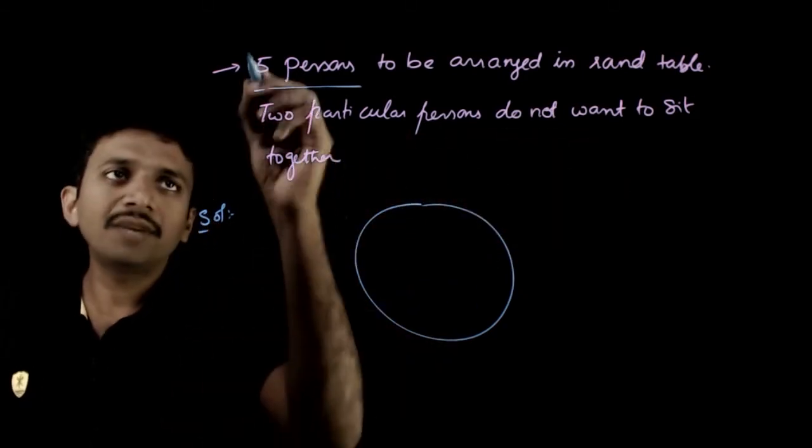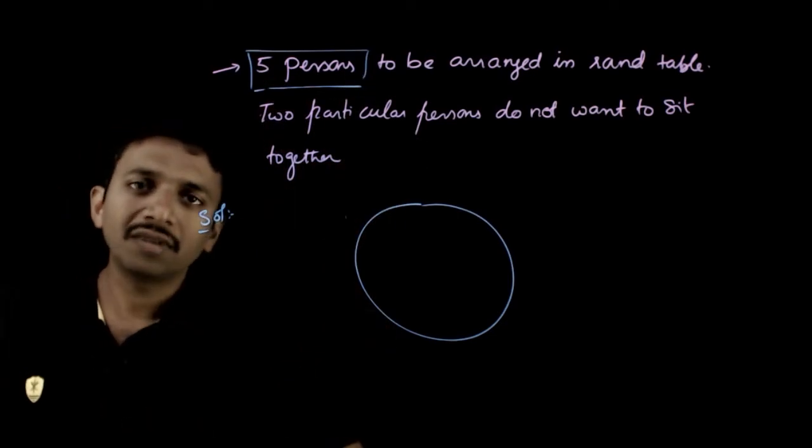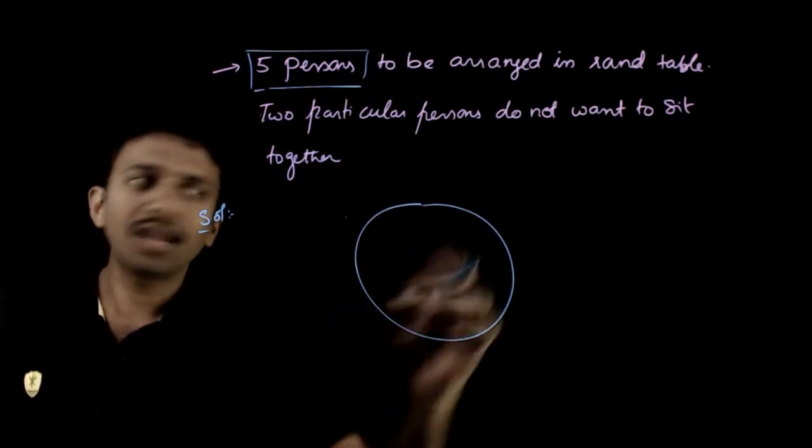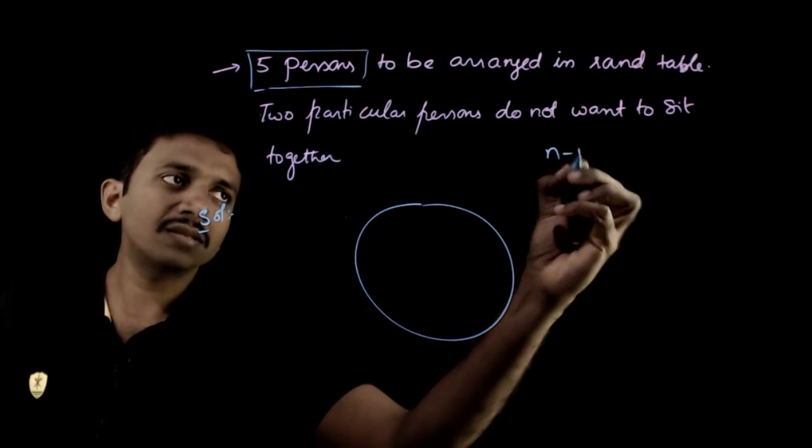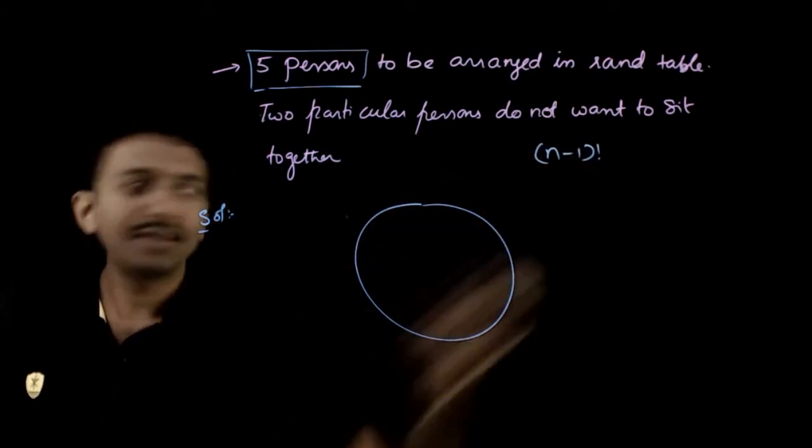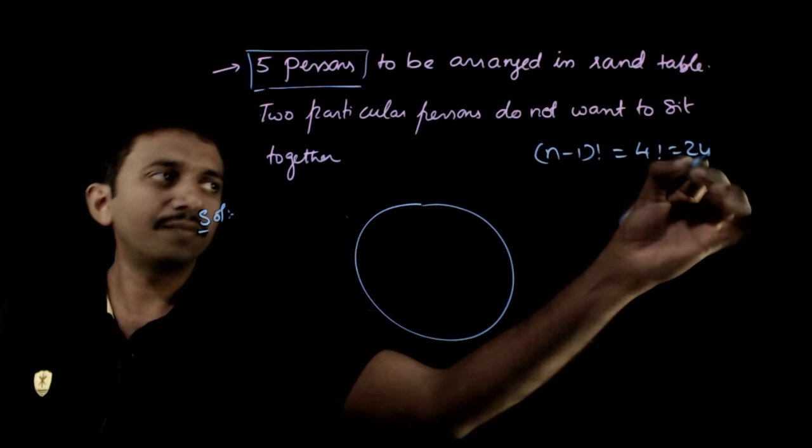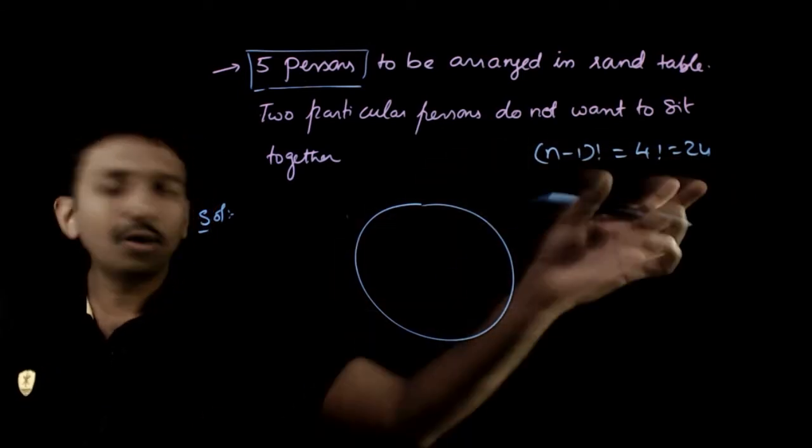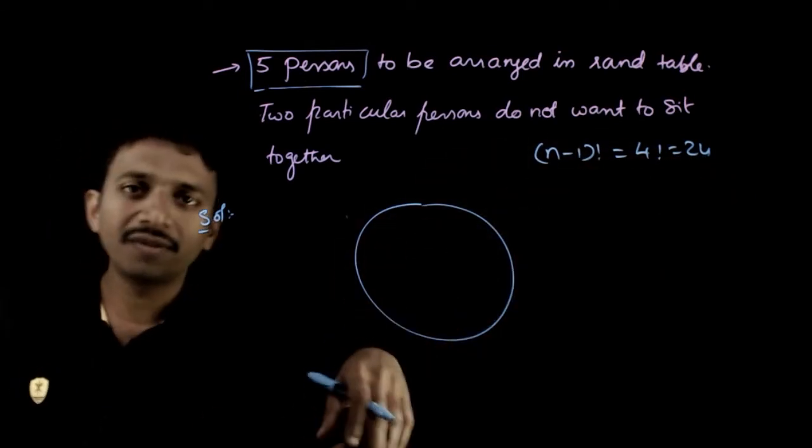Generally, if you have five persons with no condition, the total number of circular permutations is n minus one factorial. That is four factorial, which equals 24. So these are the total number of arrangements - you have 24 total arrangements.